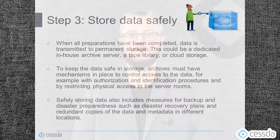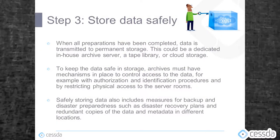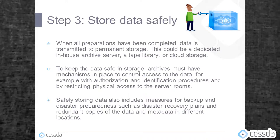The third step: store the data safely. When all preparations have been completed, the data is transmitted to permanent storage. This could be a dedicated in-house archive server, a tape library, or cloud storage. To keep the data safe in storage, archives must have mechanisms in place to control access to the data, for example with authorization and identification procedures and by restricting physical access to the server rooms. Safely storing data also includes measures for backup and disaster preparedness, such as disaster recovery plans and redundant copies of the data and metadata in different locations.